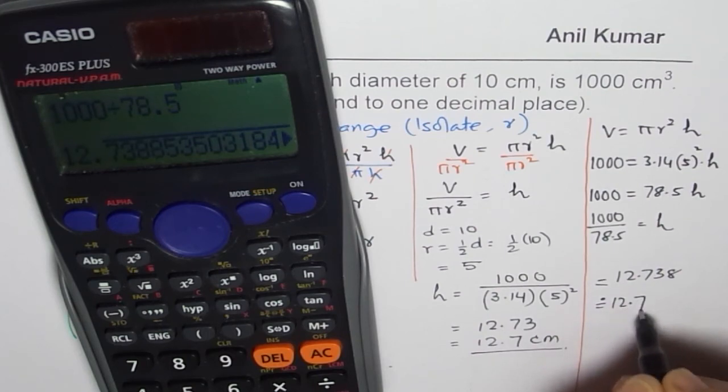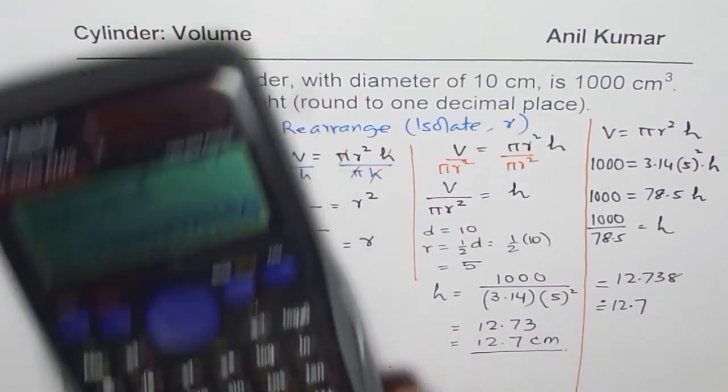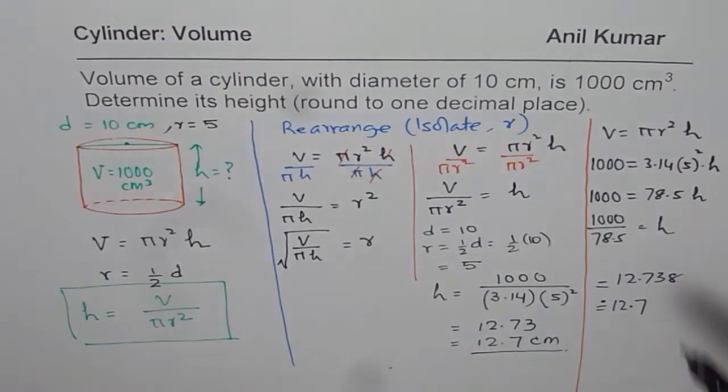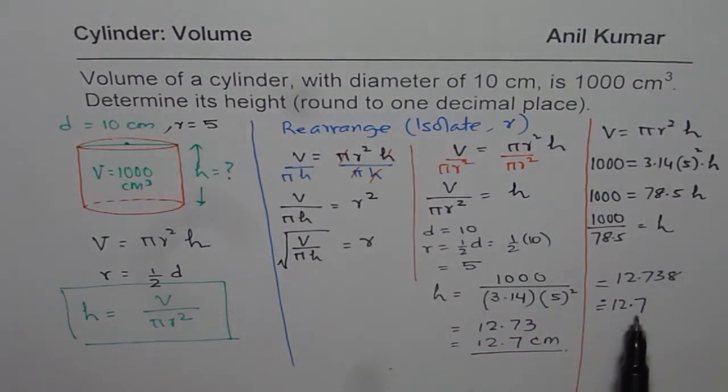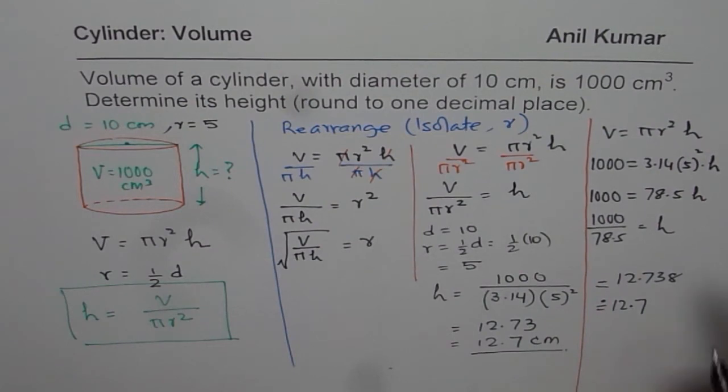Exactly same thing. Approximately 12.7, since we need to round it to one decimal place. So you can do without rearranging also. Straightforward, takes less time. Don't forget the units, it should be centimeters.